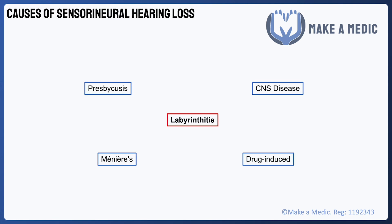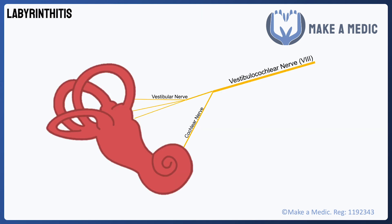Labyrinthitis is another disease which causes hearing loss and vertigo. This is a self-limiting inflammatory condition, which is most commonly caused by a viral infection, and it affects the entire maze of fluid-filled channels in the inner ear. This includes the cochlea and the vestibular apparatus, so that's why there's a combination of hearing loss and imbalance. A similar condition that's often confused with labyrinthitis is vestibular neuritis, but the inflammation there is limited to the vestibular nerve, so hearing should not be affected.